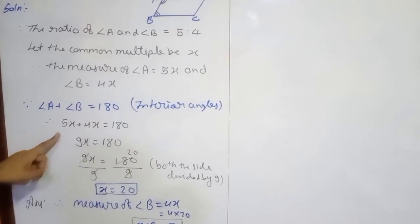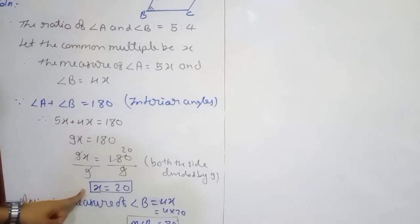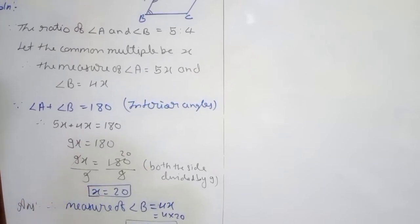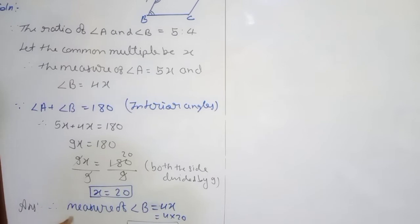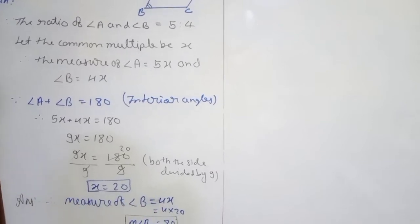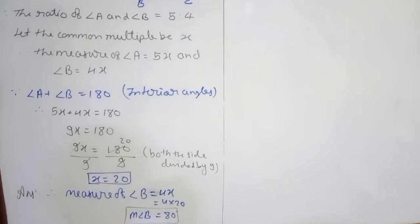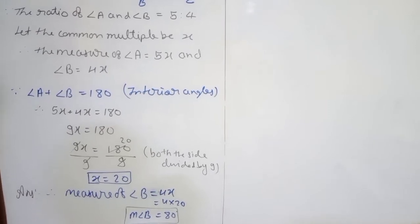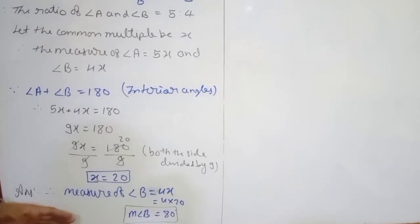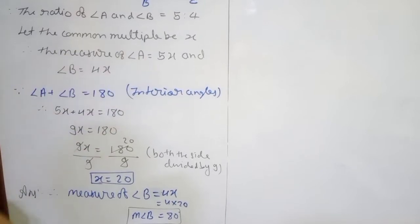The sum of these two interior angles is 180. We substituted the values 5x and 4x, so we got the value of the common multiple x equal to 20. Therefore, measure of angle B is equal to 4x, that is 4 into 20, which equals 80 degrees. The same way, if we want to find the measurement of angle A, we can find it as well.